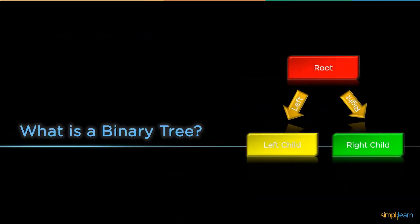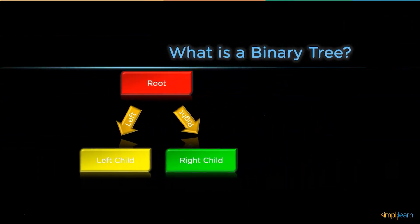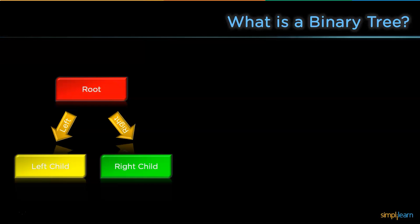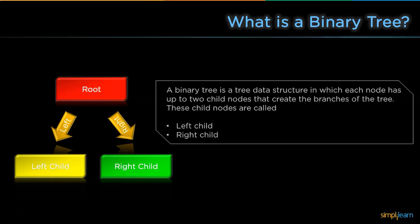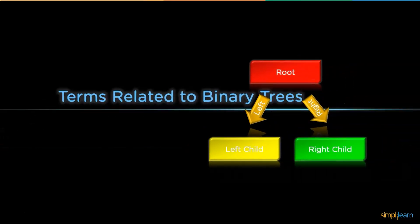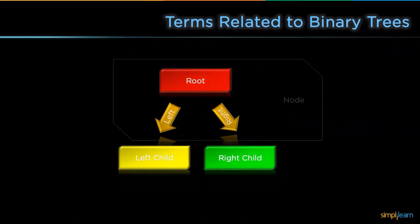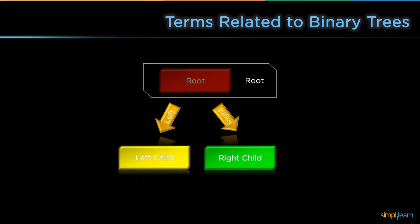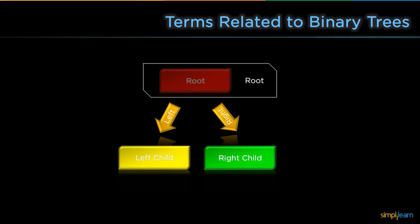So what exactly is a binary tree? It is a tree structure in which each node can have at most two child nodes. These nodes are referred to as the left child node and the right child node. A node consists of data and links to both its child nodes. The root node is the first node of the tree.